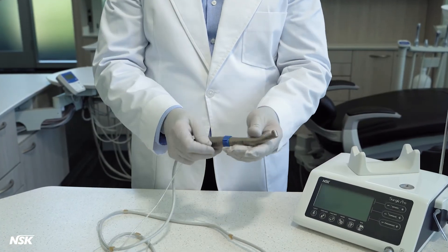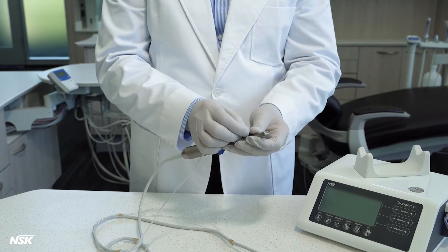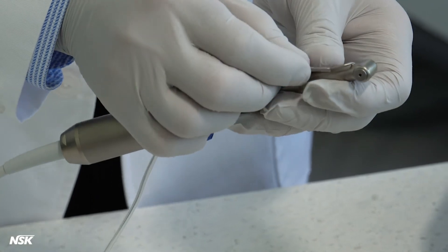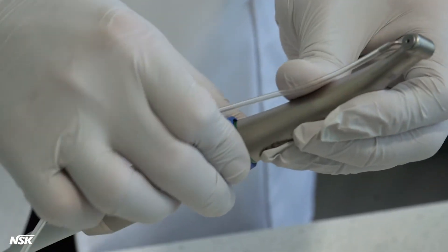There are two ways to connect the irrigation tube to the implant attachment, depending on the type of drill being used in the operation. Single external spray is very common, in which case, connect the end of the irrigation tube directly to the external spray nozzle of the attachment.